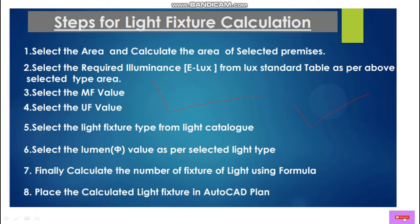In the first step: select the area and calculate the area of the selected premises. Then select the required illuminance lux level from the lux standard table as per the selected area type. Then select the MF, which means maintenance factor value.